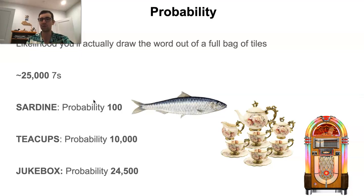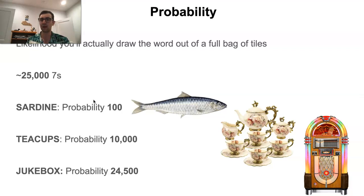A bag of Scrabble tiles has a predetermined distribution. Certain letters like the E, A, I, N, R, T occur quite often, whereas certain letters like the Q and the Z occur quite rarely. Words like SARDINE have a lot of the more frequently occurring letters — the S and D occur four times, the A and I nine times, the R and N six times, and the E twelve times. So all the letters in SARDINE occur with pretty high frequency in the bag, and it's approximately the hundredth most likely seven out of about 25,000.